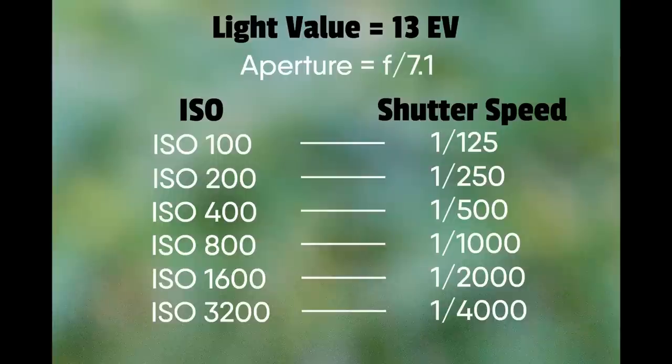There's a diagram here showing how when you increase your ISO you can increase your shutter speed. At a base ISO of 100 we had a shutter speed of 1/25th of a second. As you increase your ISO by a stop — 100 to 200 — you increase your shutter speed by a stop from 1/25th to 1/250th, and so on. That's basically all your ISO is doing — giving you a brighter scene and more light to play with. If you increase your ISO you get higher shutter speeds. It's pretty simple.